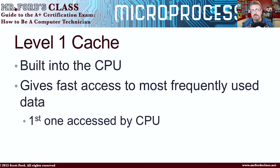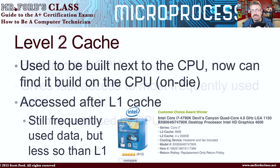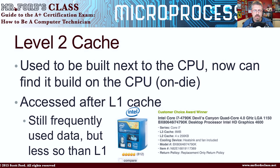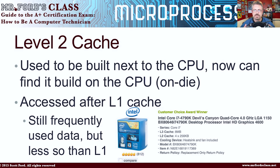But let's say that first personal assistant doesn't have the information. Behind that first personal assistant is a second assistant — in this case it's known as the L2 cache. It used to be built next to the CPU, used to be on the motherboard, and now they build it on the CPU. This is called OnDie. Level 2 cache is OnDie. It's accessed after L1 cache, and it's still frequently used data, but less so than the Level 1 cache.